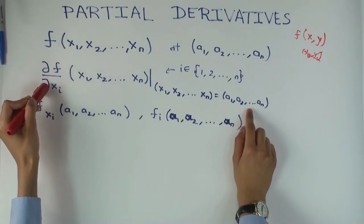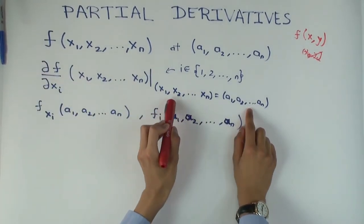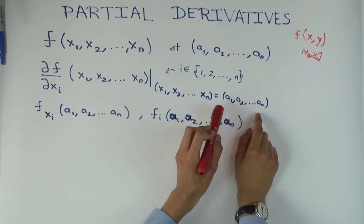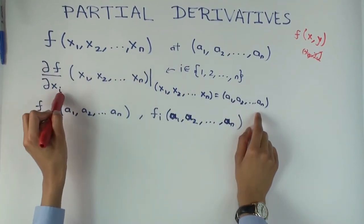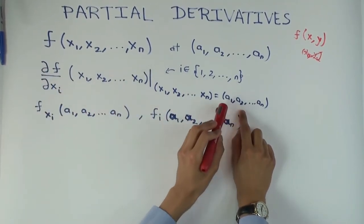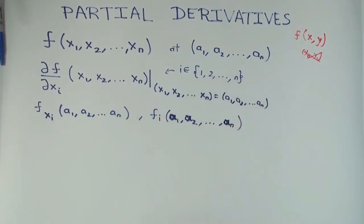does it depend only on the ith coordinate? No. So the value of the partial derivative with respect to xi depends on the values of all the inputs. The value of the partial derivative with respect to x2 will depend not just on the value a2, but it will also depend on a1 and a3 and everything else.